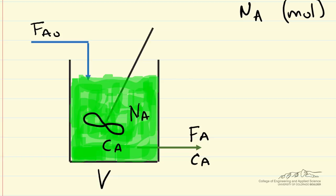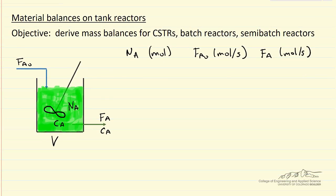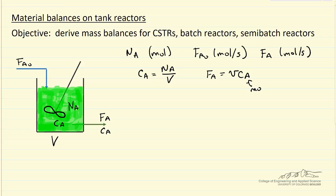They will also have to be the same temperature. CA within the reactor is the total number of moles of A in the reactor divided by the volume of the reactor. The flow rate of A leaving the reactor is the volumetric flow rate times the concentration in the exit stream, which is also the concentration within the reactor — concentration of course being moles per volume, say per liter in this case. The concentration in the feed stream we'll call CA0.